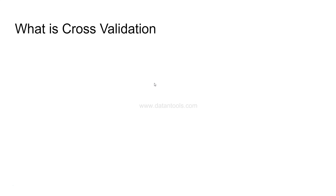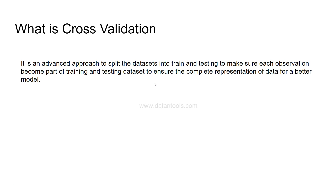In my own words, cross validation is an advanced approach to split datasets into training and testing. We have the conventional way where we just split data between training and testing using the train-test split method. In Python's machine learning library you specify x and y variables and the test size — generally 30%. In cross validation you do the same, but with a twist which I will show you.